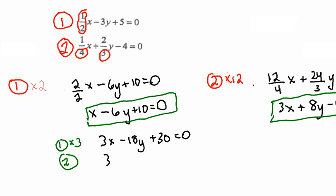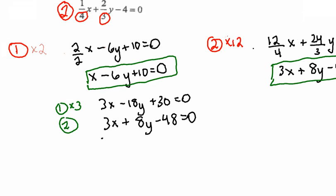So I have 3x plus 8y minus 48 equals 0. And now I'm going to solve. So the way I'm going to solve is by elimination. And I have 3x, which means I need to subtract 3x. So I'm going to subtract those two equations.